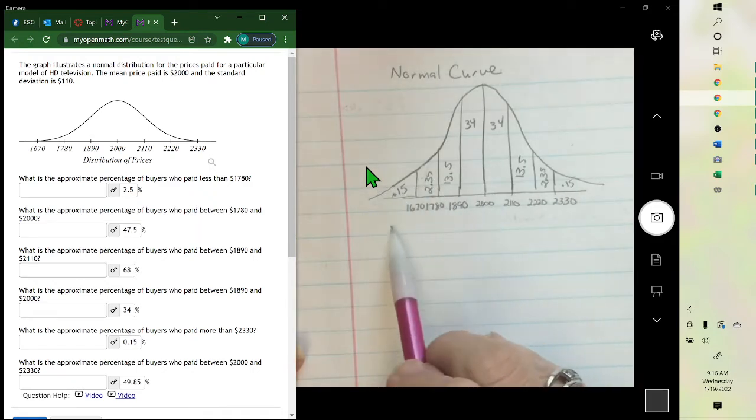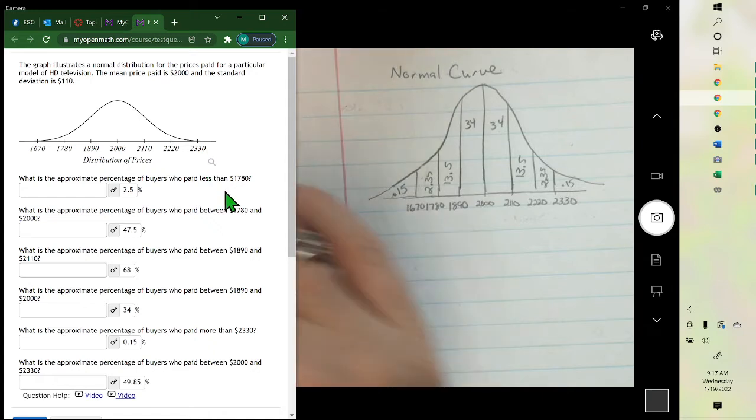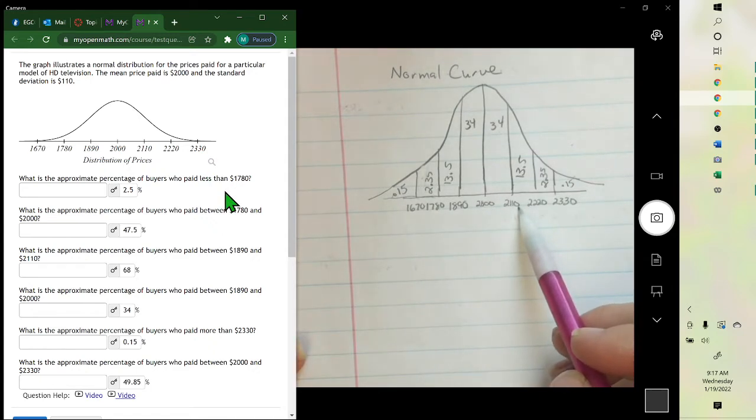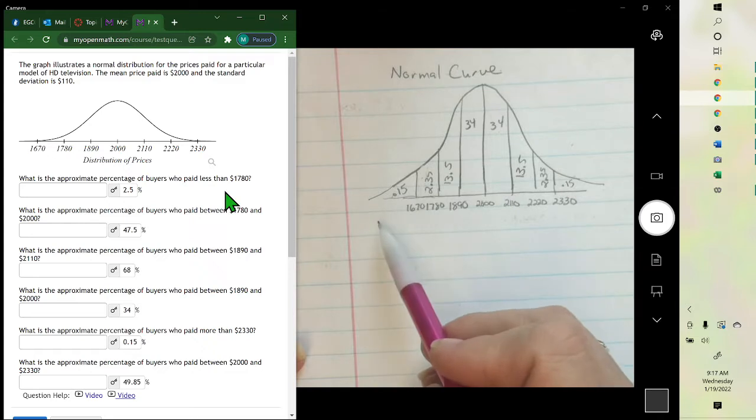The values they're giving you at the bottom here, the mean, the 2,000, is in the middle, and standard deviation is what we count by. So they counted by 110. So 2,000 plus 110 plus another 110. Going the other way, you've subtracted it.